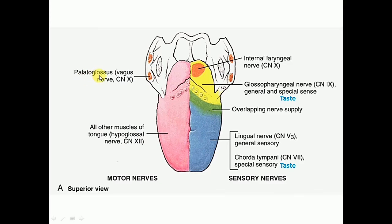The palatoglossus muscle is supplied by the vago-accessory complex, which also supplies all the other muscles of the soft palate. All the muscles of the soft palate are derived from the fourth pharyngeal arch, so palatoglossus is not supplied by the hypoglossal nerve but by the nerve of the fourth pharyngeal arch — the superior laryngeal branch of the vagus.